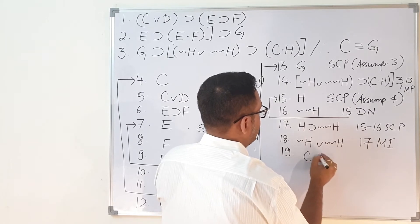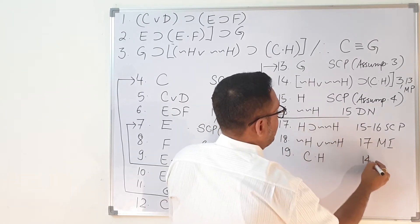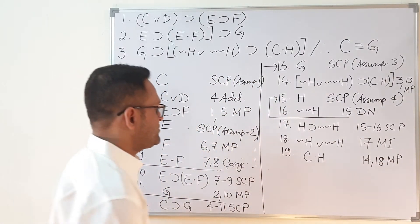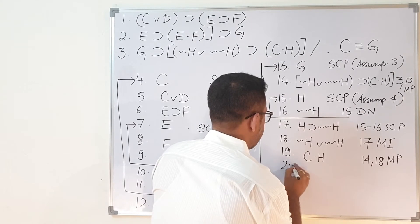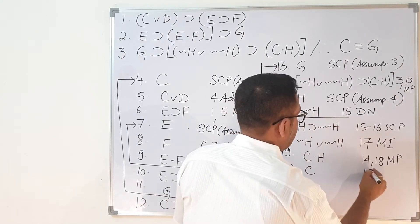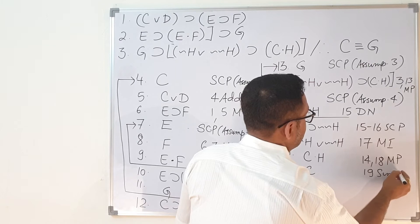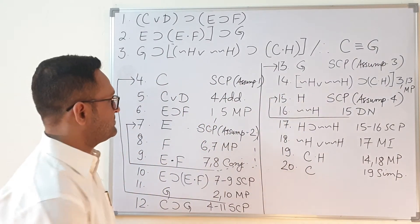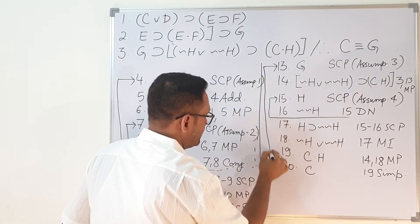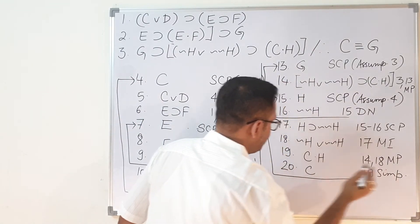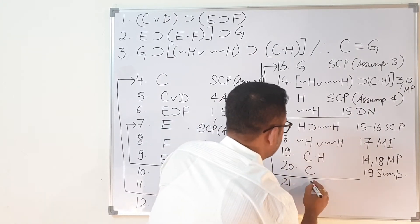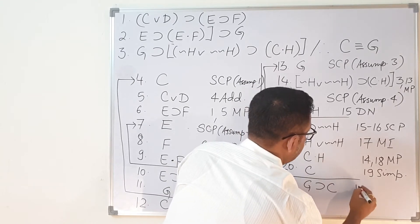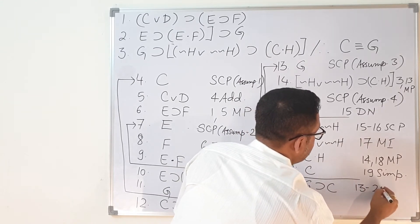On line 19, applying modus ponens to lines 14 and 18, I get C·H. On line 20, I apply simplification to line 19 and get C. On line 21, I write G implies C, from lines 13 to 20 by SCP. This completes the second part.